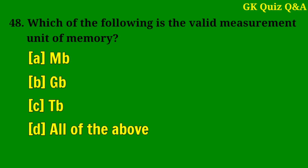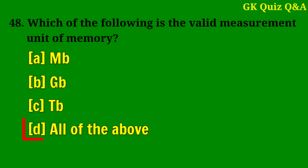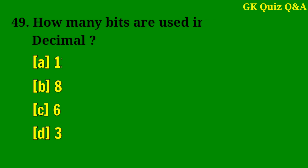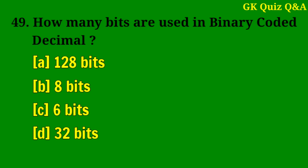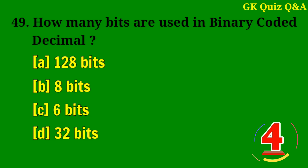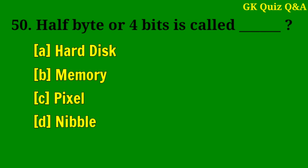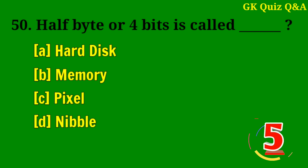Which of the following is a valid measurement unit of memory? Answer D: All of the above. How many bits are used in binary coded decimal? Answer C: Six bits. Half byte or 4 bits is called? Answer D: Nibble.